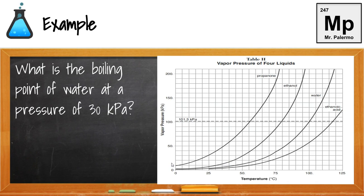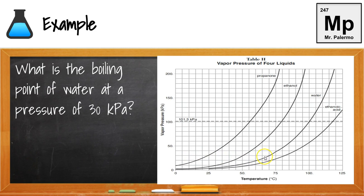We'll see that if this line is 10 and the next is 20, the vapor pressure here is about 17 kilopascals — they'll give you a range of acceptable answers. Here's another example: What is the boiling point of water at a pressure of 30 kilopascals? Locate 30 kilopascals of pressure — the first line is 10, then 20, then 30 — go all the way across to water, then go down. The temperature is at the 70 degrees Celsius mark, so the boiling point of water at 30 kilopascals would be 70 degrees Celsius.